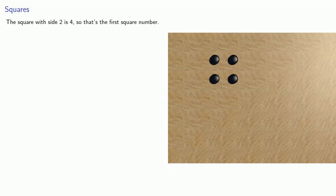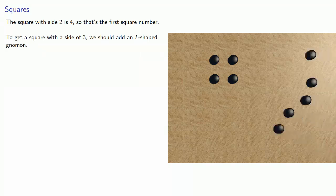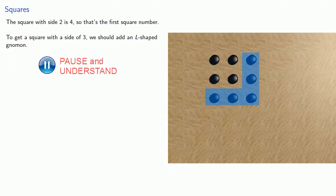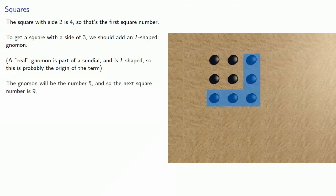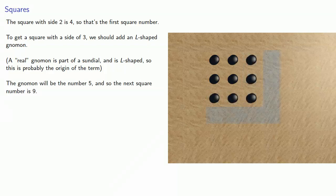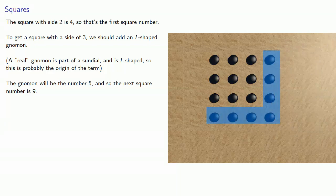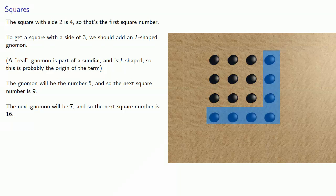Now if I want to get a square with a side of three, we want to add a gnomon. And in this particular case, we should add an L-shaped gnomon. And in fact, a real gnomon is part of a sundial, and it is L-shaped. So this is probably the origin of the term gnomon. Now if you look at what we need to add, this gnomon corresponds to the number five, and so the next square number will be nine. The next gnomon will add an L-shaped piece to get us to the next larger square, and this gnomon will have seven, and so the next square number is going to be sixteen.